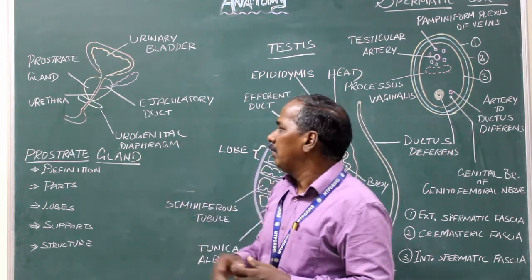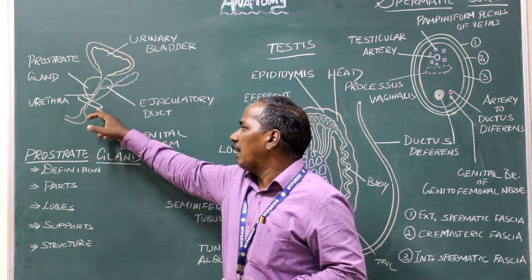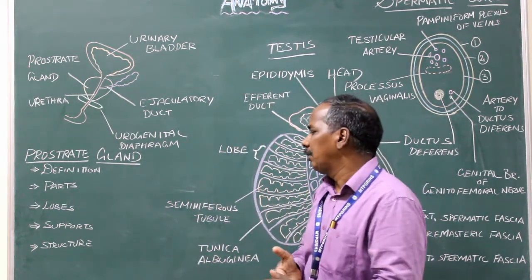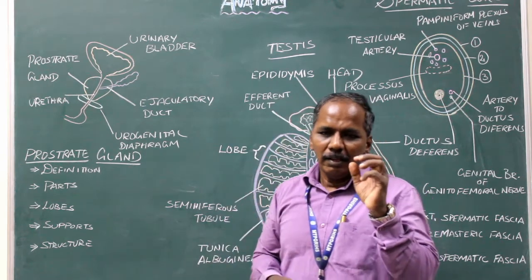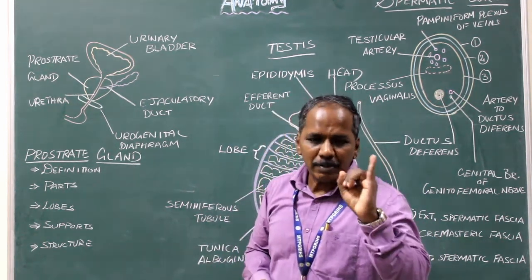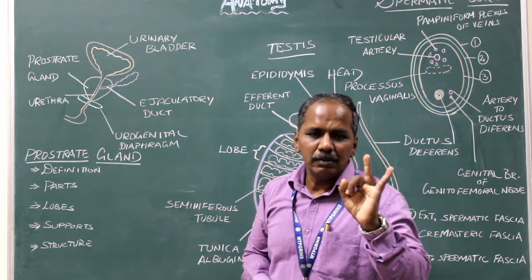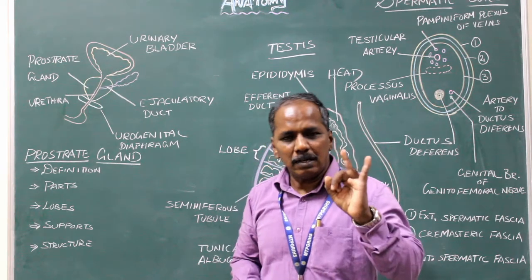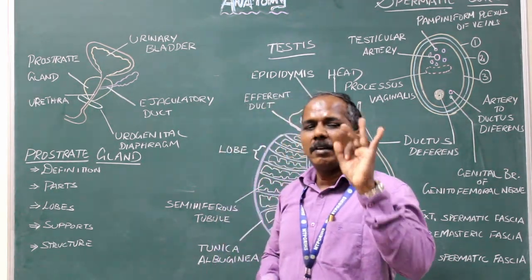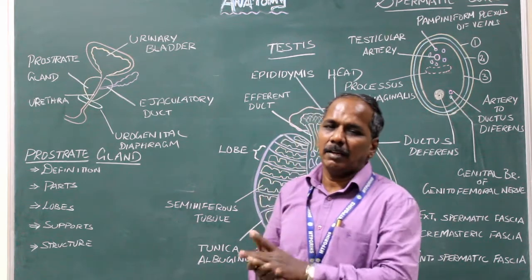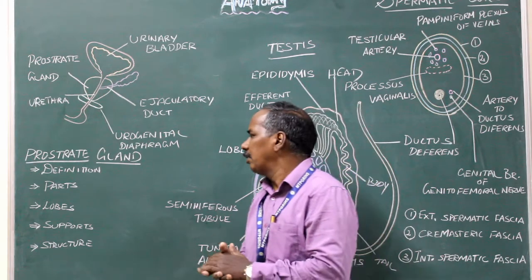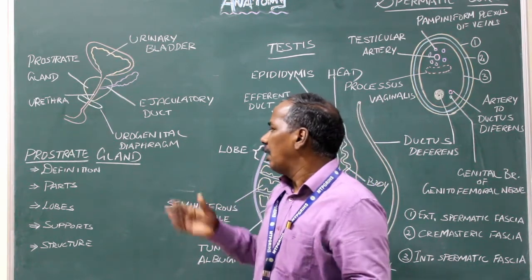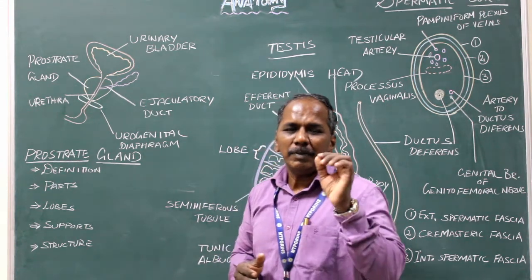Supports of the prostate gland: it is supported by number 1, urogenital diaphragm; number 2, puboprostatic ligament. Structure: it is made up of fibrous tissue, muscular tissue, and glandular tissue. Fibrous tissue forms one-fourth of the gland, muscular tissue forms one-fourth of the gland, and glandular tissue forms half of the gland. Blood supply: internal pudendal arteries. Nerve supply: pelvic splanchnic nerves.